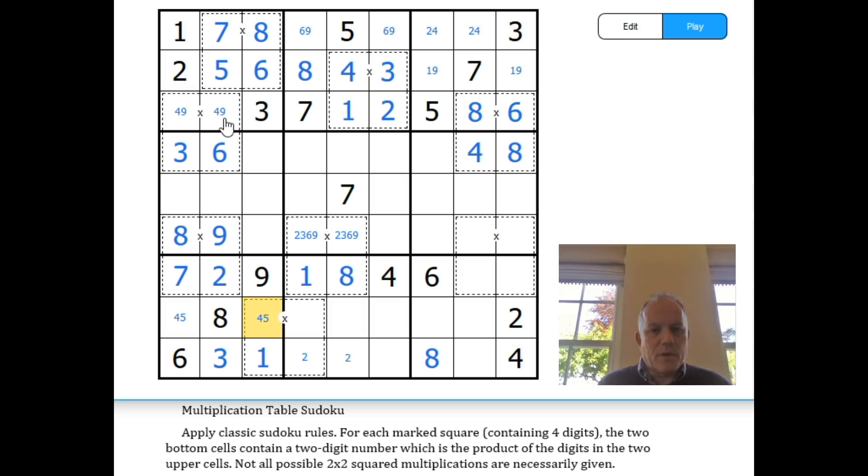Five could end this cage because it could be five times three equals 15, but equally it could be four times three equals 12. Let's see what else we can establish. This nine resolves this pair: this must be either four or five, this is a one.